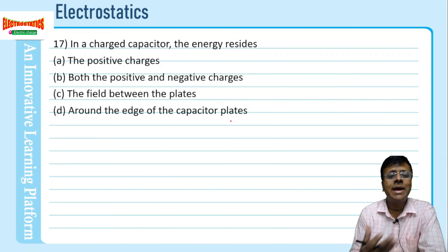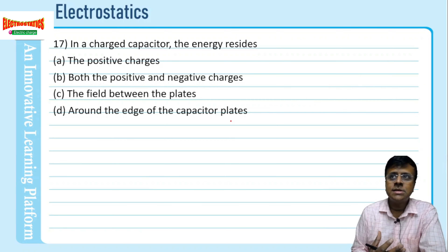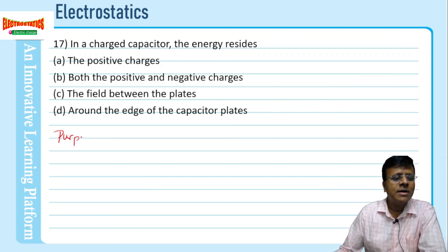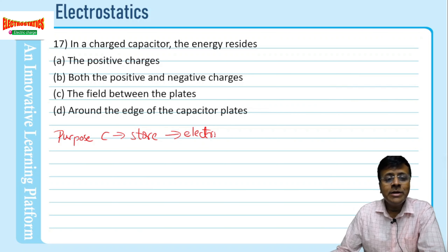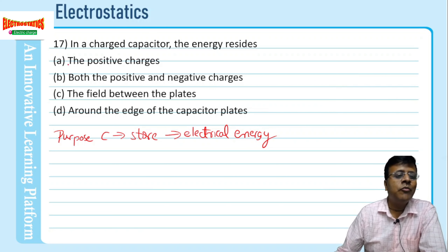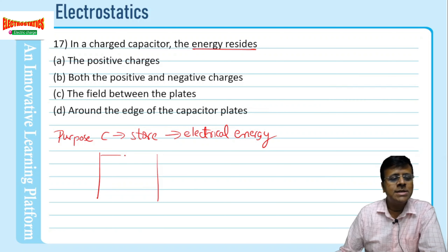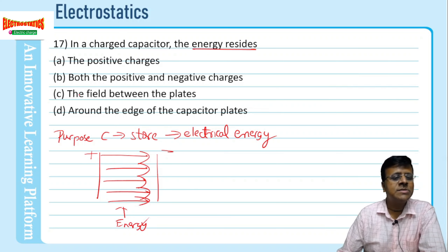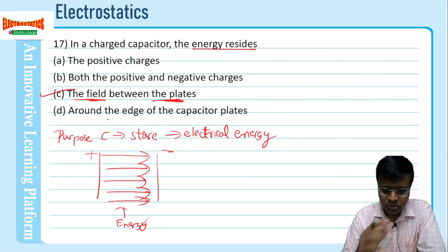In a charged capacitor, where does the energy reside? Just like the purpose of a barrel is to store water, the purpose of a capacitor is to store electrical energy, and an inductor stores magnetic energy. If you have two plates and the electric field goes from positive to negative plate, the energy is stored in that electric field between the plates — that is the correct answer.